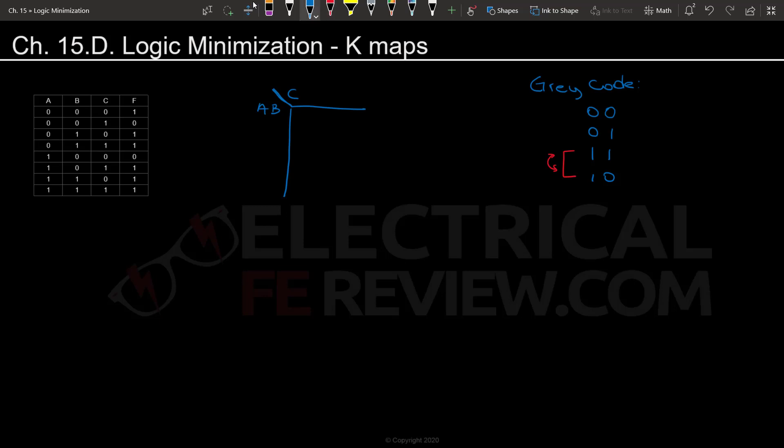We're going to basically copy and paste this gray code into the A and B column so that we know what variables we're talking about. And for C, since it's just one variable we can put 0 and 1. If we had four variables we could do the same thing we did for A and B just for C and D.